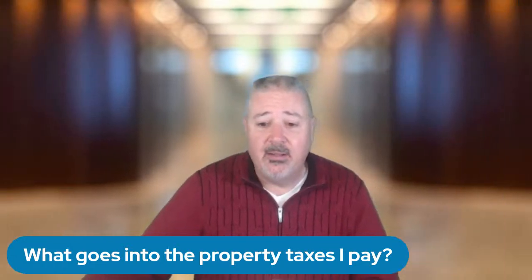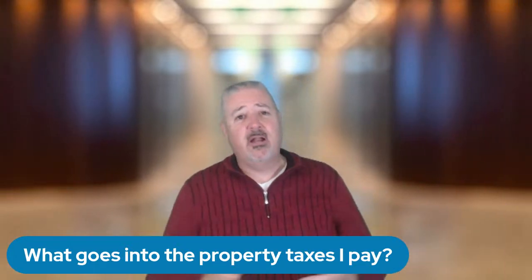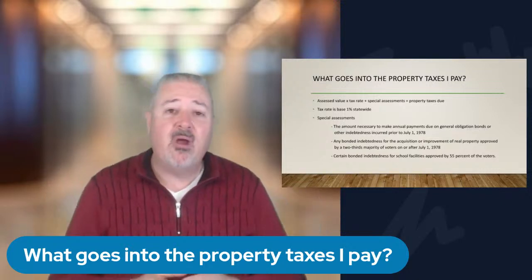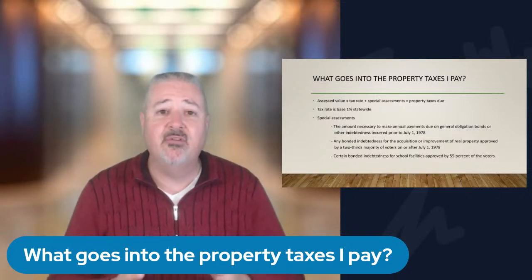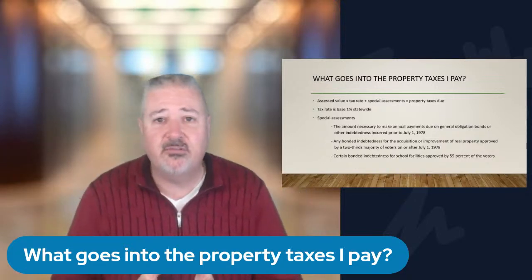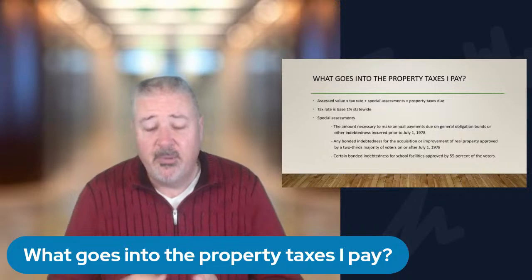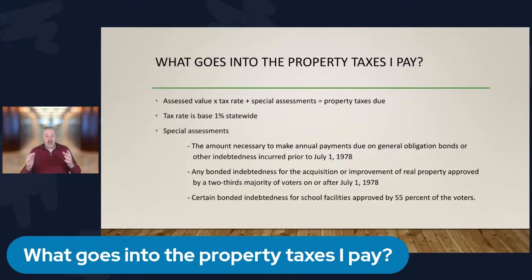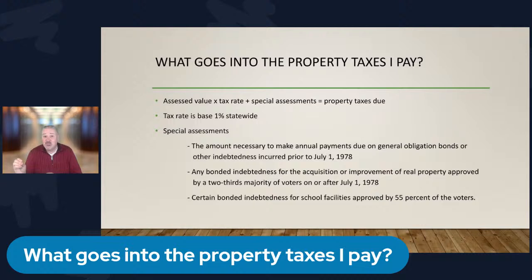Let's talk about what goes into the property taxes you pay. Prop 13 says property taxes are 1% of the value of your home — but if you bought for $500,000, your taxes are not simply $5,000, because property taxes are based on multiple things. It's the assessed value times your tax rate, which is greater than 1%, plus any special assessments. The base is 1% statewide, but special assessments can be added as a percentage of home values or as a flat dollar amount.